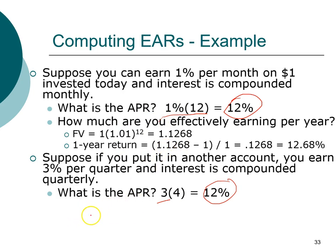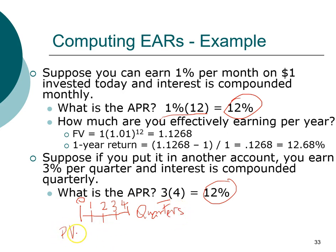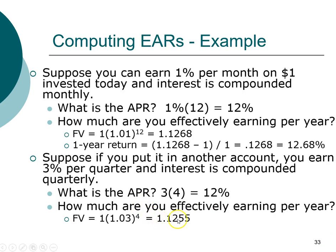I'll draw the timeline and ask you to work out the future value. Here we have one year, but we are working with quarters — there are four quarters in one year. It's important to write the time period on your timeline. The present value is also $1, the interest rate is 3% per quarter — notice how we use the period rate in our calculation. Go ahead and compute the future value. Did you get $1.1255?